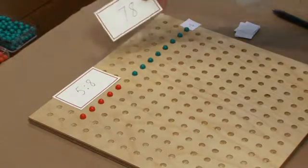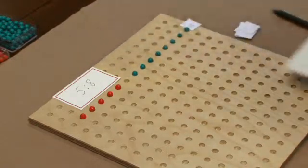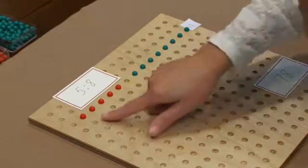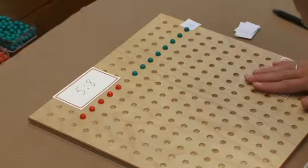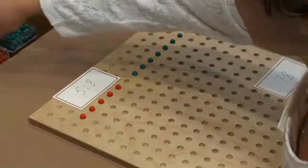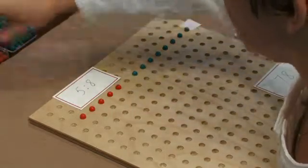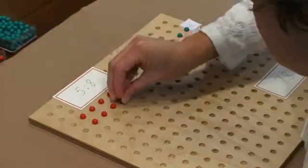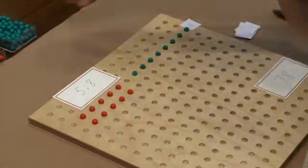And we know that 78 is the sum that we want to end with, so we're going to place this down towards the bottom of our board. And then we're going to continue placing our pegs in the proper ratio. So I need 5 more red pegs, 8 more green pegs.